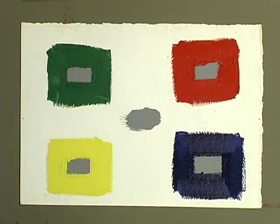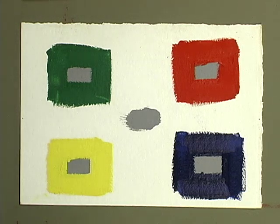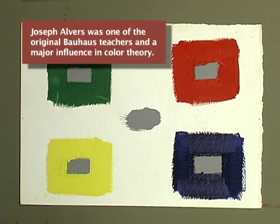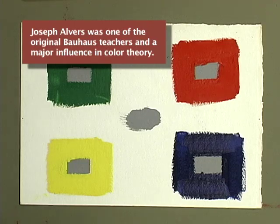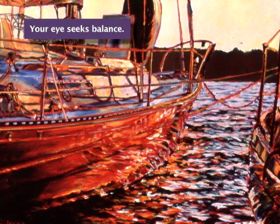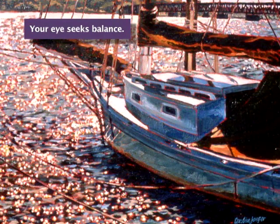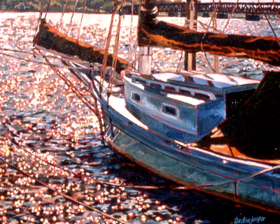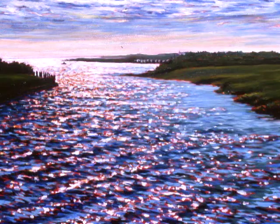I have some samples here that are a result of my studies of the color theories presented by Joseph Albers. The point of all this is to show that colors look different depending upon their context. Your eye seeks balance — that's something that needs to be pointed out here. When your vision is filled with a certain color, your eye wants the rest of the spectrum. So let's look at these really simple examples.